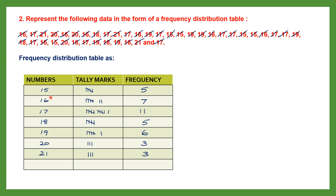So in a frequency distribution table, we write all numbers in ascending order, put tally marks counting how many times each number occurs, then count the tally marks to get the frequency. Finally, we add all frequencies for the total: 5+7+11+5+6+3+3 = 40. There are 40 numbers in total.